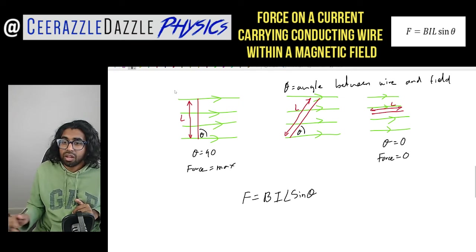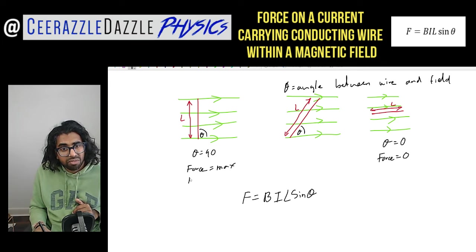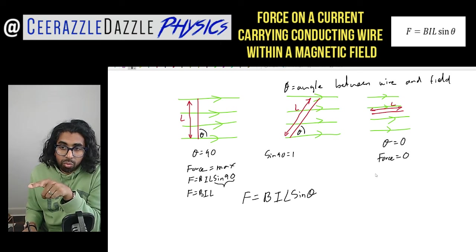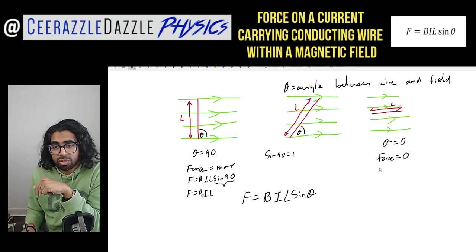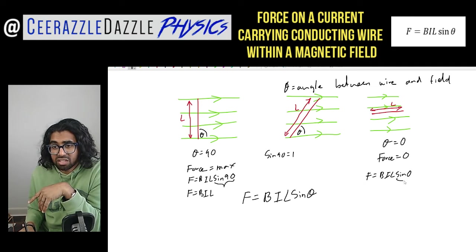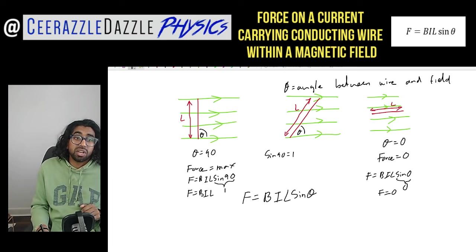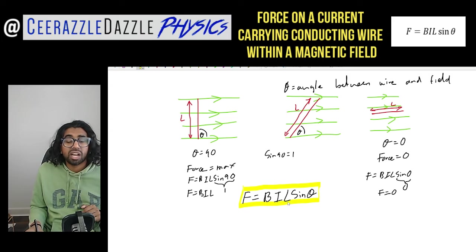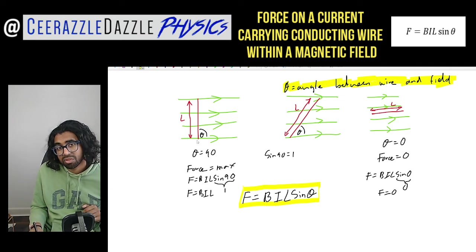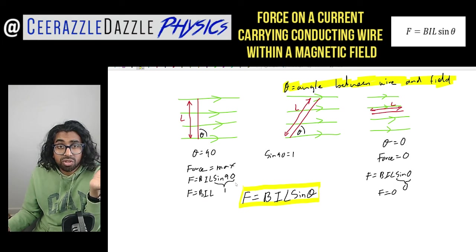We can incorporate theta to get the full formula: F = BIL sine(theta). This works because when theta = 90°, sine(90°) = 1, so F = BIL — the maximum. And when theta = 0°, sine(0°) = 0, so F = 0 — the minimum. The key is to always identify theta as the angle between the wire and the field from your diagram.